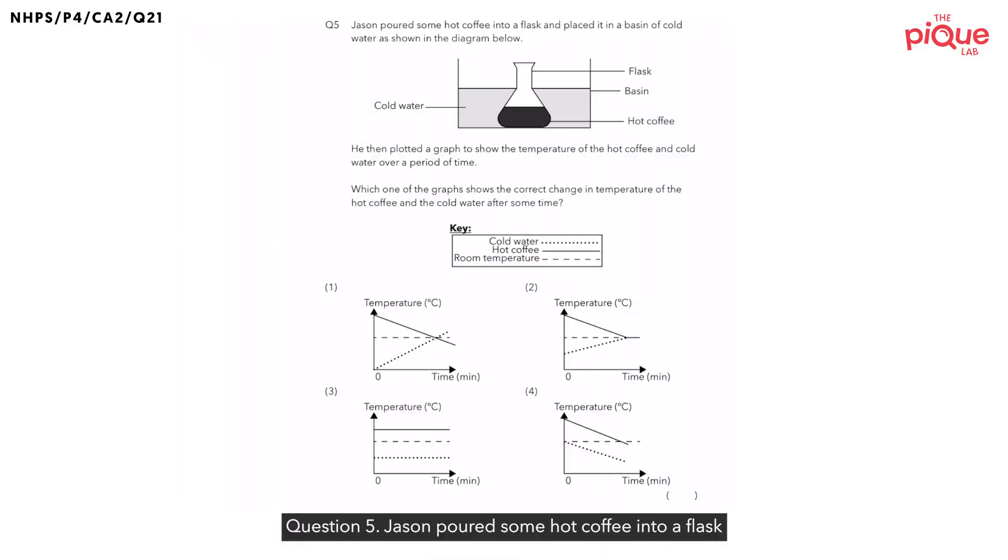Question 5. Jason poured some hot coffee into a flask and placed it in a basin of cold water as shown in the diagram below. He then plotted a graph to show the temperature of the hot coffee and cold water over a period of time. So first things first, let's try to understand the diagram a little bit more.